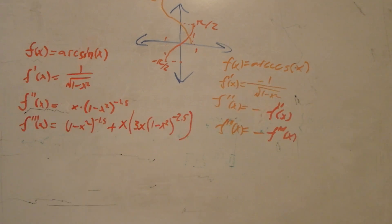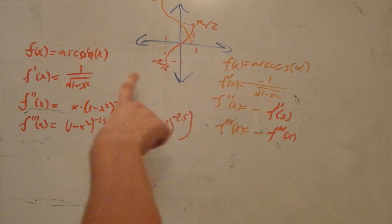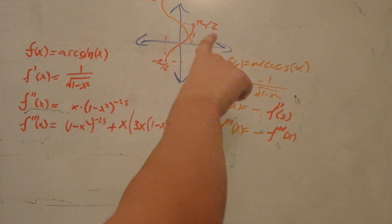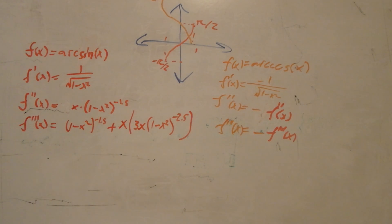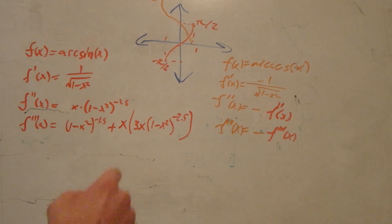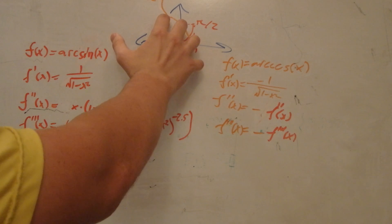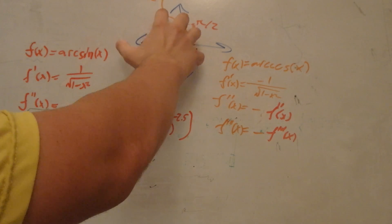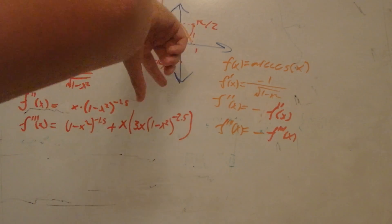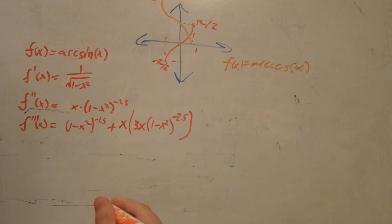I only wrote out the first three derivatives, and at this point it's important to notice that these derivatives are the same, except the arc cosine has the negative versions of the arc sine. This makes sense because there's a symmetry at x equals 0, so if we shift the arc cosine down, we can then reflect it, and that's what your arc sine is.